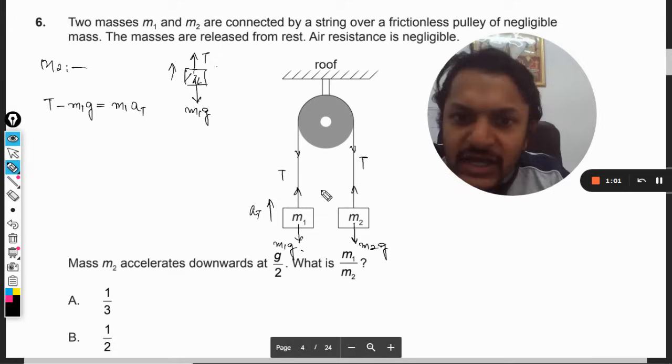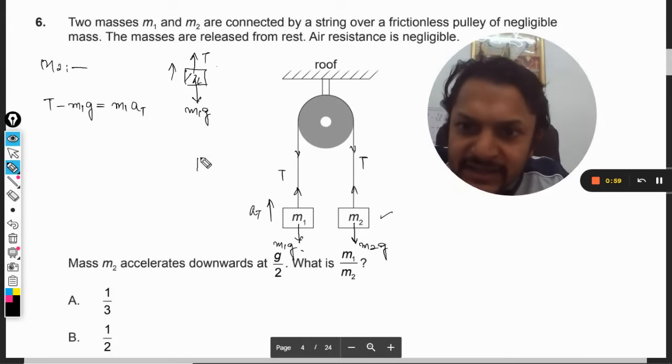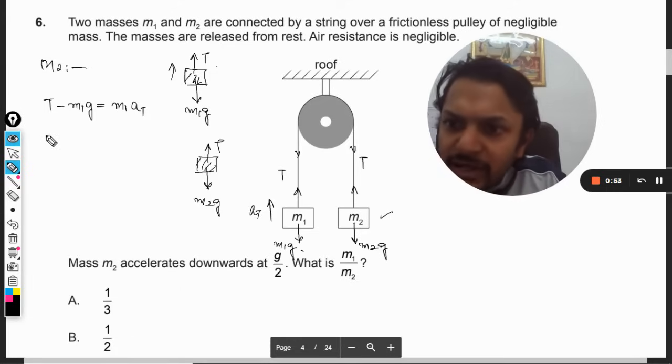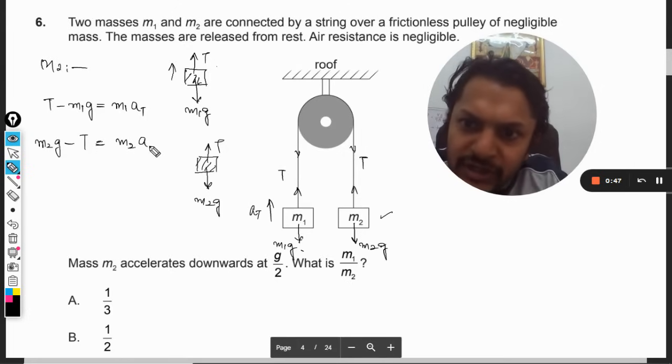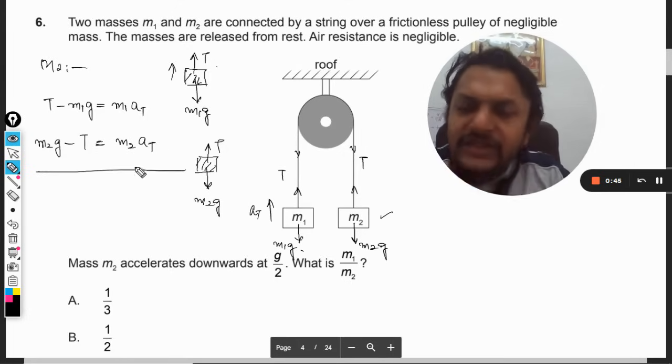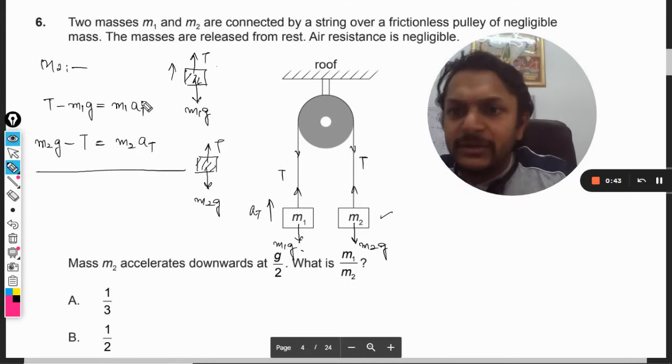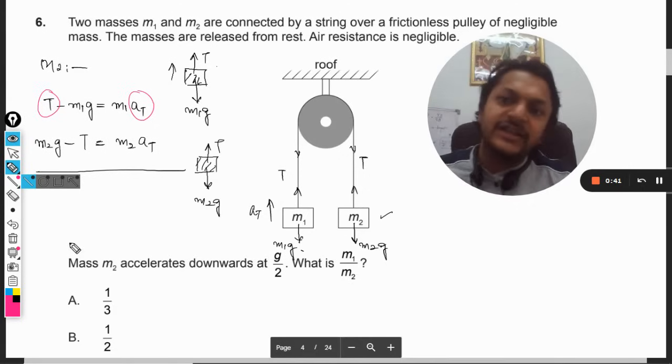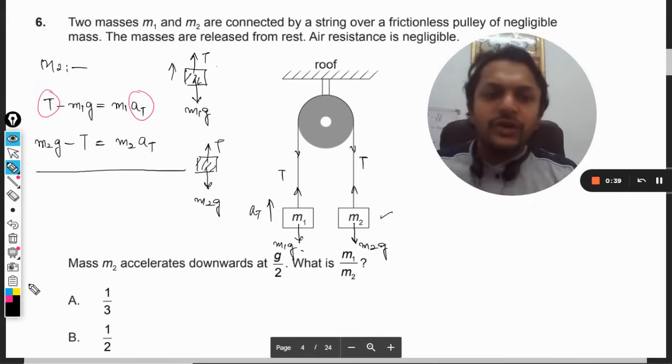Similarly, when we apply this same principle of free body diagram for this, it becomes m2g minus T equals m2 into a. Now these are the two equations and we have two different variables here, so on solving these two we would be getting our answer.